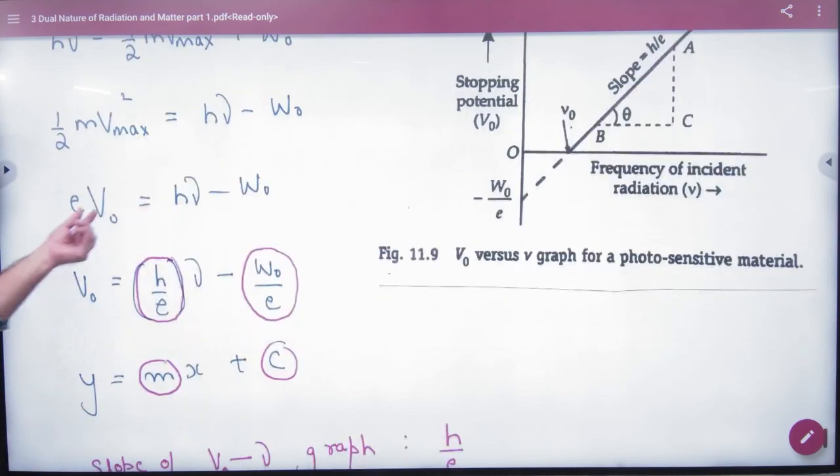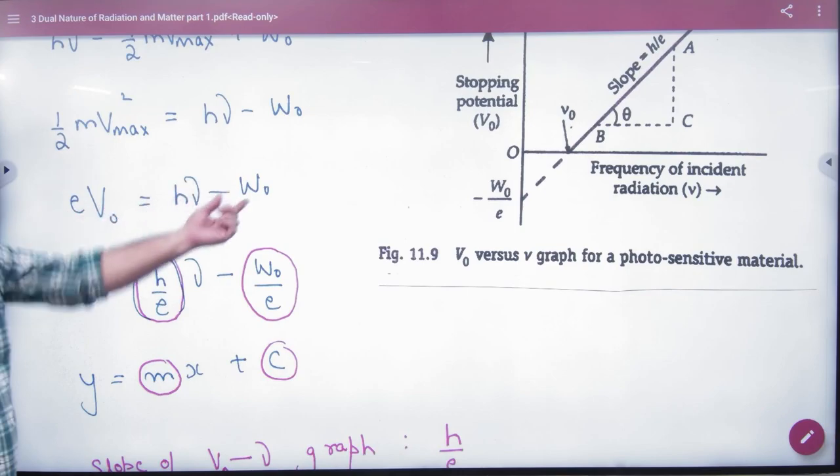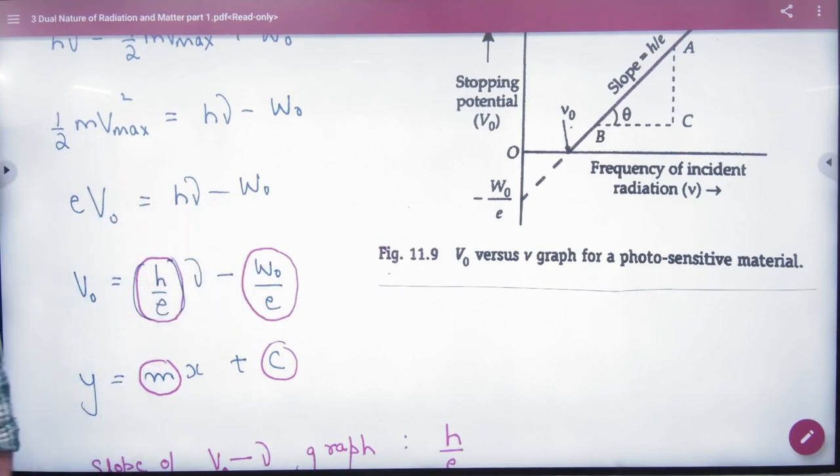So what is V₀ value here? We can take e below, so which value came? Potential - stopping potential. So this is stopping potential and this is frequency.